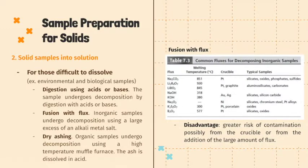For inorganic samples that resist digestion, a large excess of alkali metal salt — also known as flux — can be used. The sample and flux are mixed in a suitable crucible, then heated and fused in its molten state. After cooling to room temperature, the resulting melt can be dissolved in distilled water or dilute acid. Examples of flux include sodium carbonate for samples with silicates, oxides, phosphates, and sulfites, and lithium borate and lithium metaborate for aluminosilicates and carbonates. A disadvantage is a greater risk of contamination, possibly from the crucible or from the large amount of flux added.